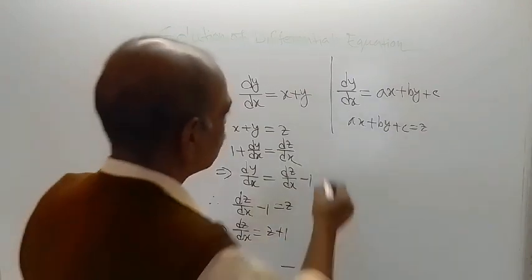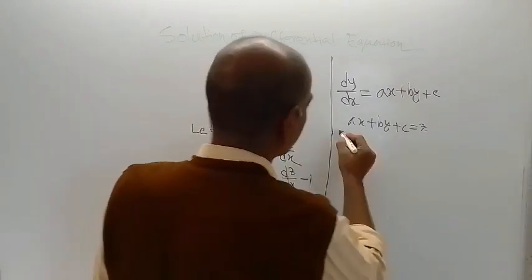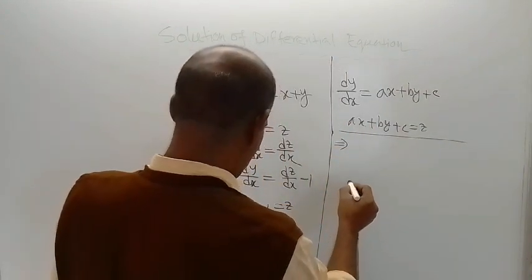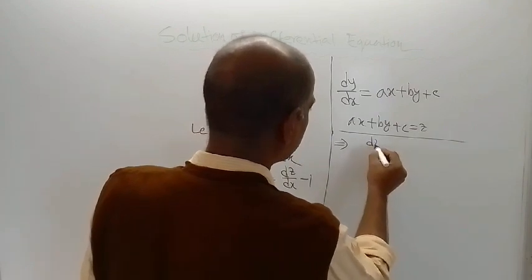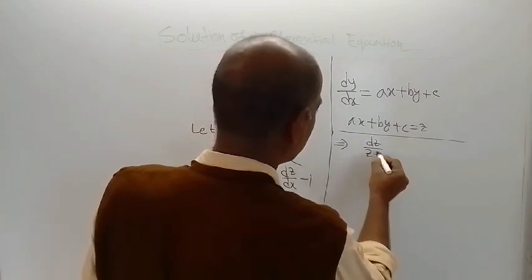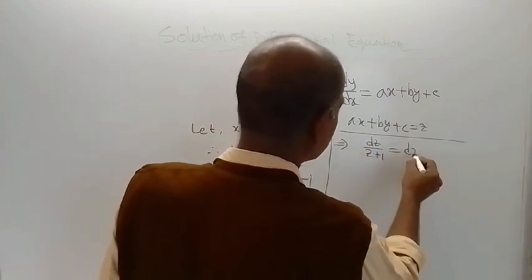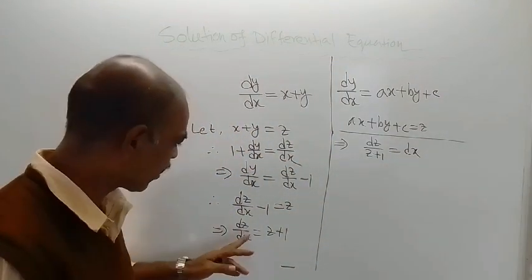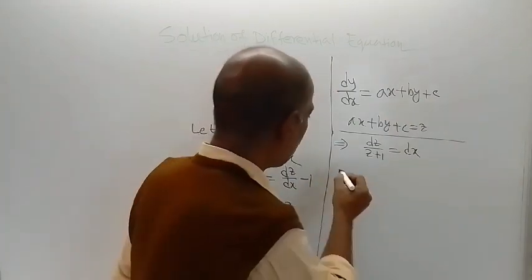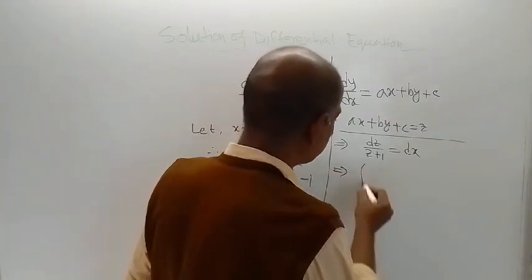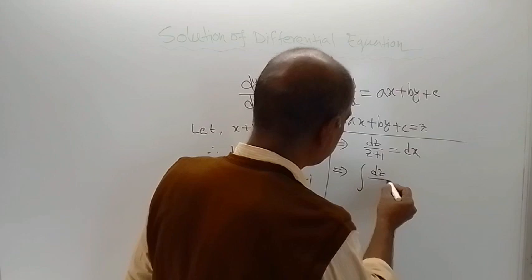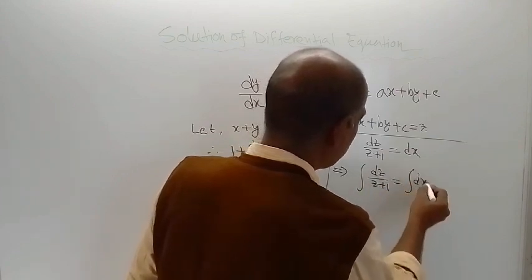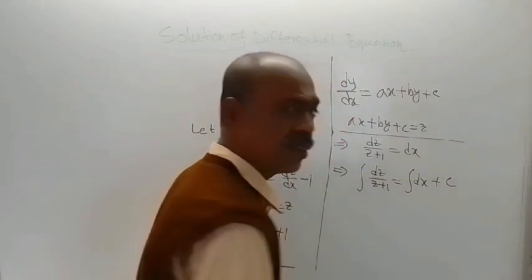In the next step, we can write dz divided by (z plus 1) is equal to dx. Now integrate both sides: the integral of dz/(z+1) equals the integral of dx plus a constant c.